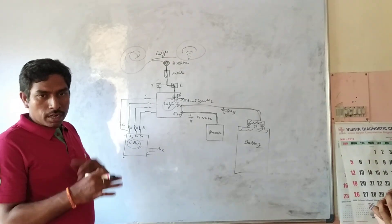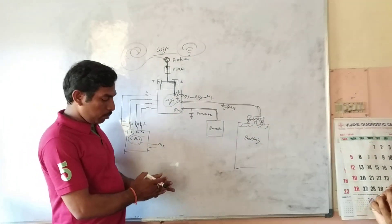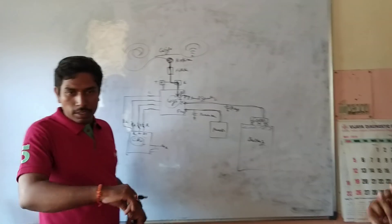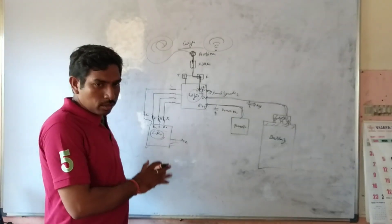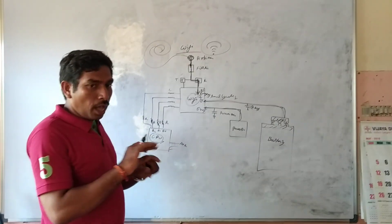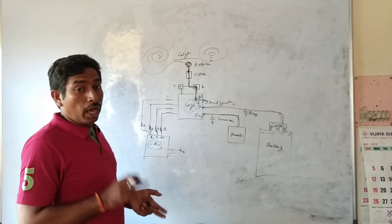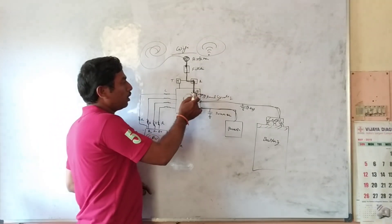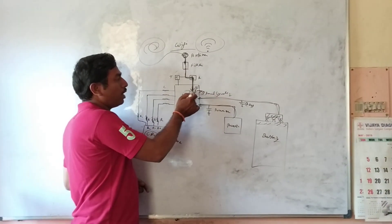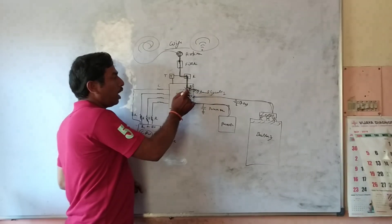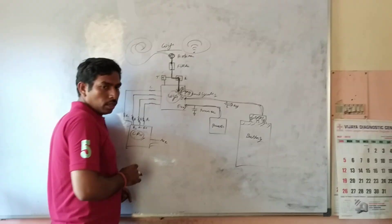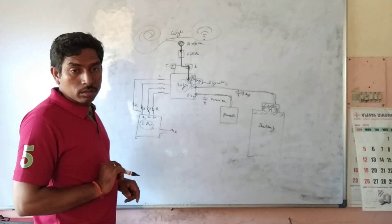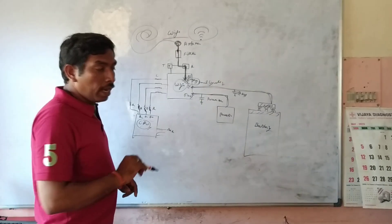RF signals are converted. The image is used as a mobile device, so it goes to the RF signals. After RF signals, this is the Wi-Fi signal. Every one goes to the RF signal. That's the RF signal converted to the electrical signal, and from the electrical signal further.